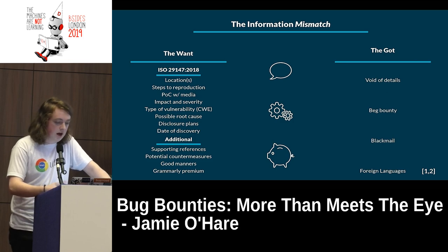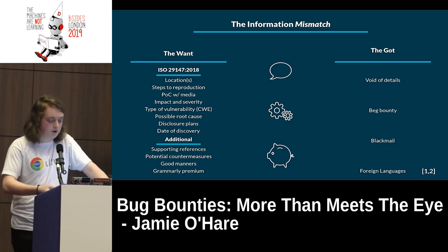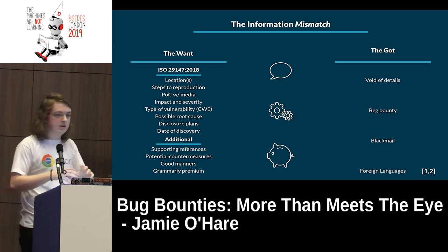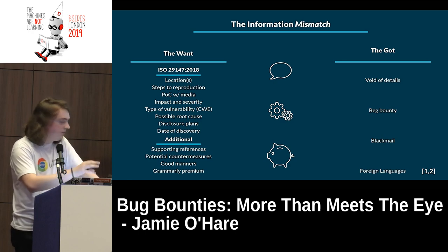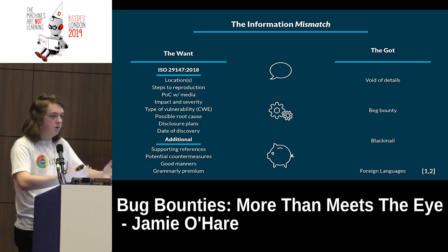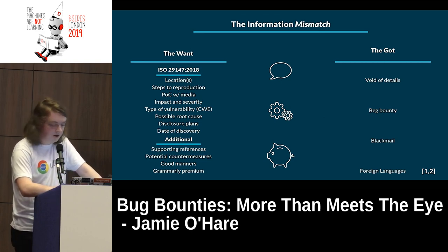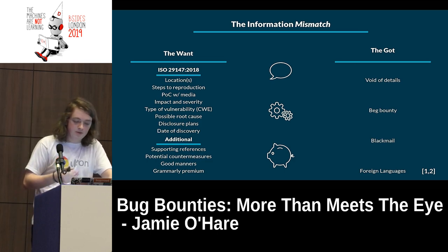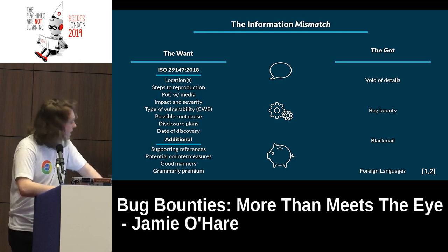This is shown in academic surveys and in market material for the big bug bounty systems like HackerOne and BugCrowd — it leads to faster resolution of bugs. Not mentioned in the ISO but still great to include: supporting references, potential countermeasures (though in bug bounties you don't always know what's going on behind the curtain), good manners — don't be a dick — and Grammarly Premium. Easier-to-read vulnerability reports are actually resolved faster, which comes up in academic surveys quite a bit.